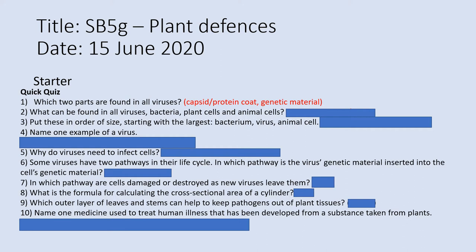What can be found inside all viruses, bacteria, plant cells and animal cells? It is, of course, their genetic material. The one thing some of you might have tried to put is cytoplasm, but unfortunately that doesn't cover viruses, just the other three. In order of size, going from largest to smallest, we should have the animal cell, then the bacterium, and then the virus.